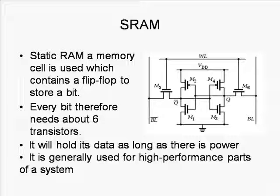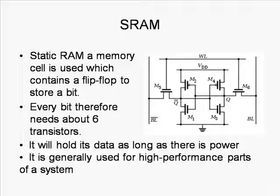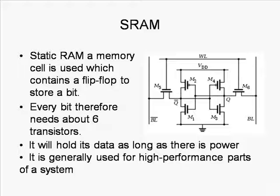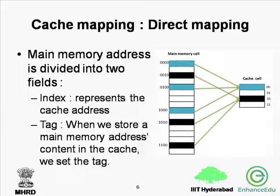Registers, on-chip L1 cache, and off-chip L2 cache are made of SRAMs. The main memory holds disk blocks retrieved from the local disk, and the local disk can hold files from the disk or remote network servers. Smaller, faster, and costlier SRAMs are used for cache memories, whereas larger, slower, and cheaper memories serve the main memory. Memory hierarchy is a very important consideration for the design of embedded systems.